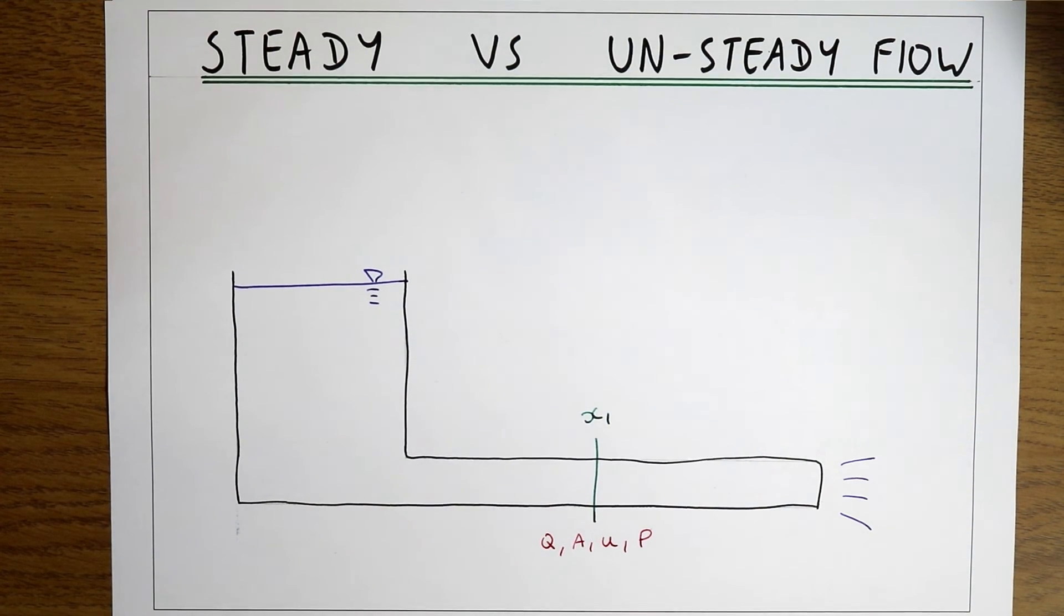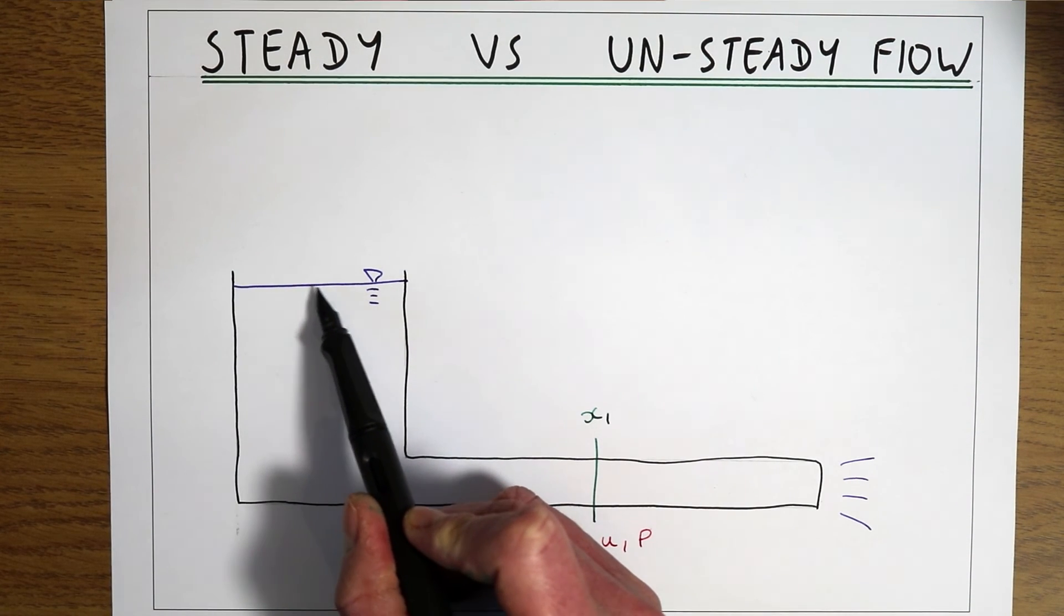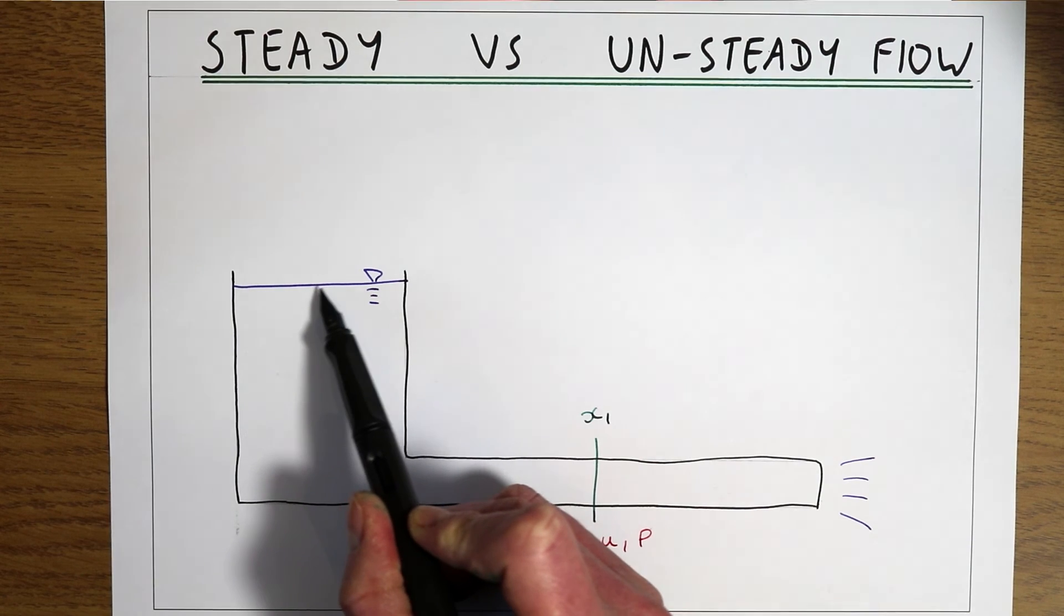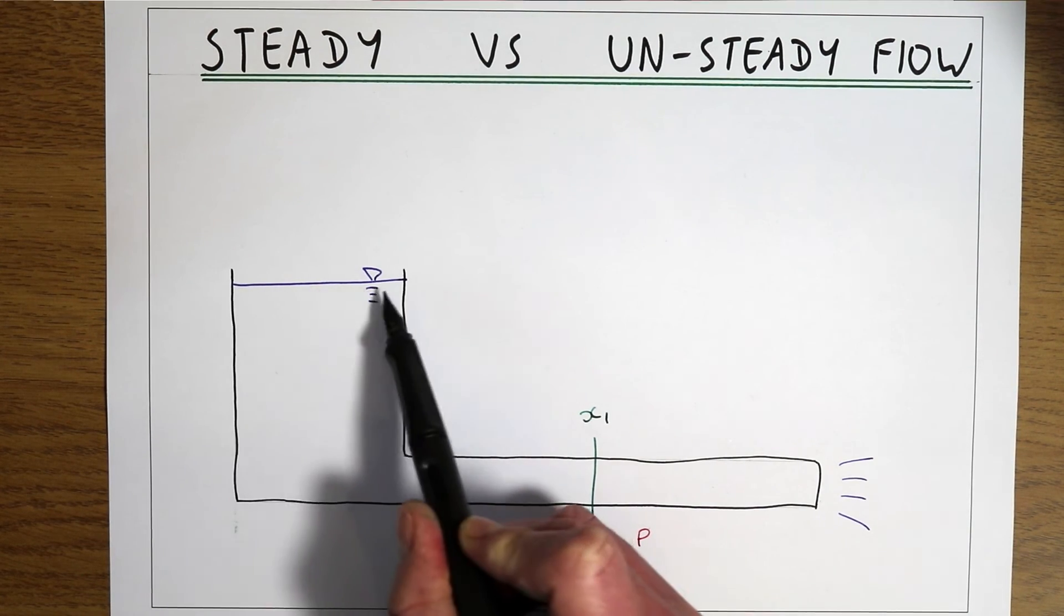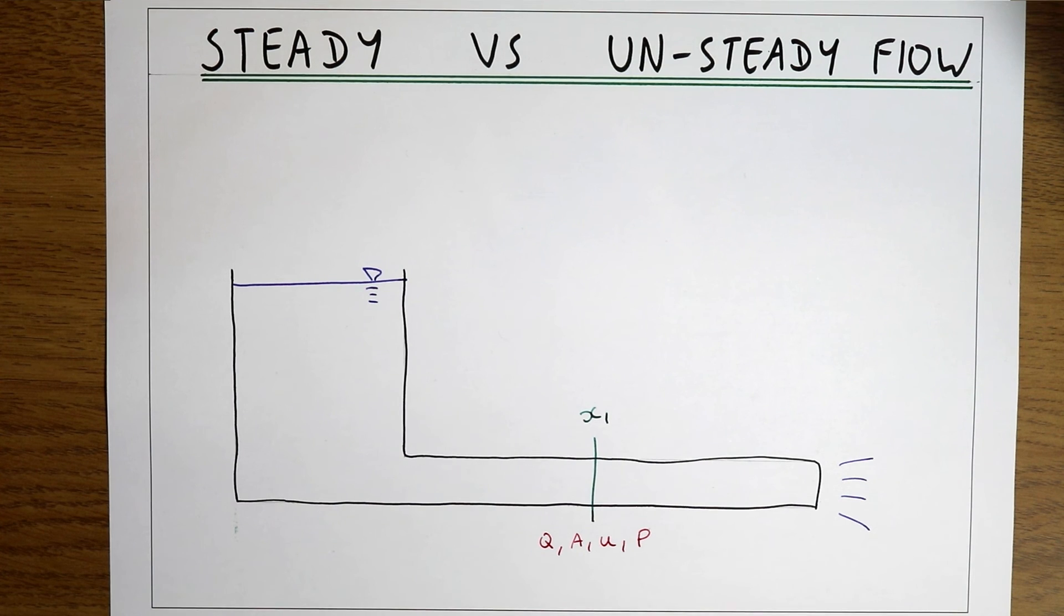This would be an unsteady flow, but we could make it steady if we put a system in place that kept the water level in this tank at a constant level. If this was a constant header tank and the water level always stayed at this level, then this would be a steady flow because the discharge, the velocity, and the pressure wouldn't change with time.